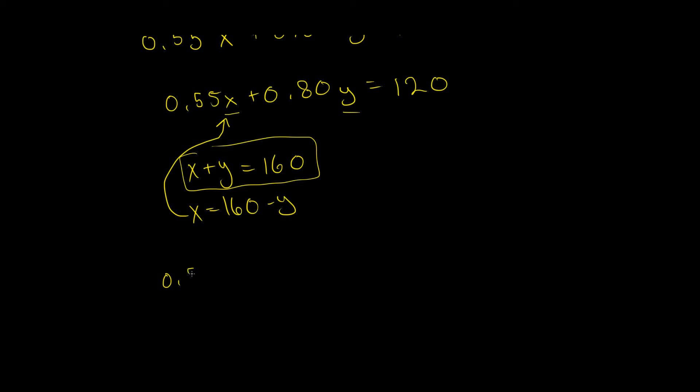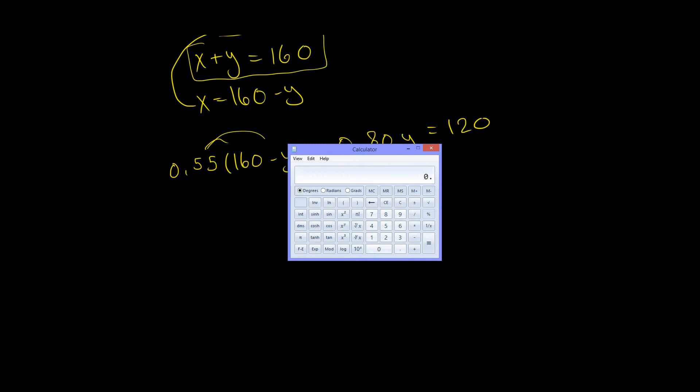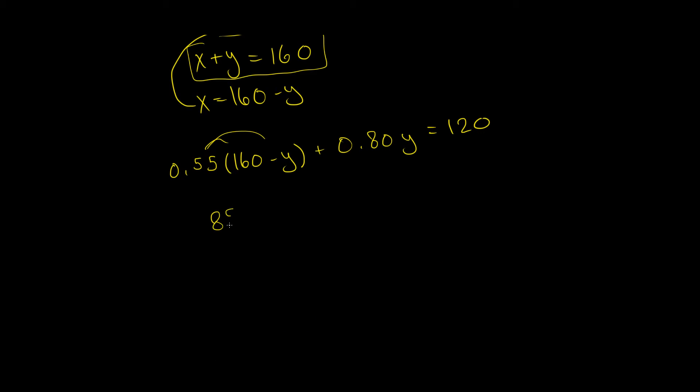So I get 0.55, 160 minus Y plus 0.80Y equals 120. I'm going to distribute this in here. I'm going to get 0.55 times 160, that gives me 88. So 88 minus 0.55Y plus 0.8Y equals 120.